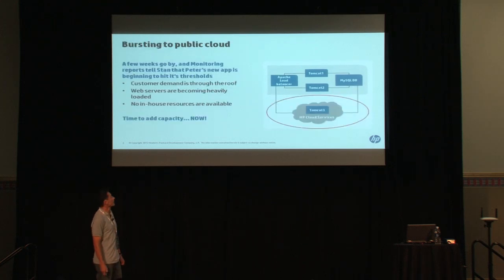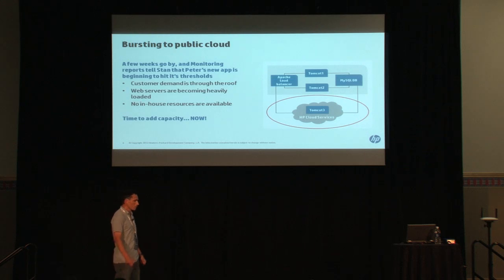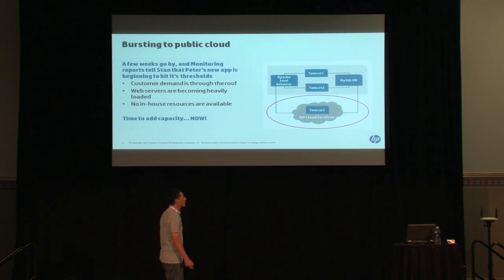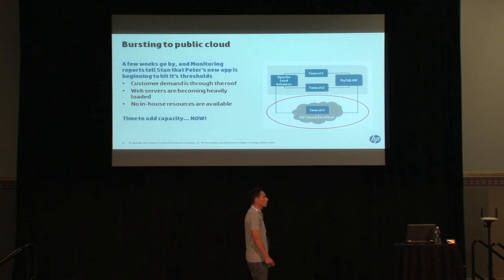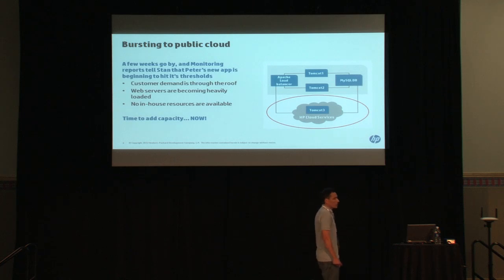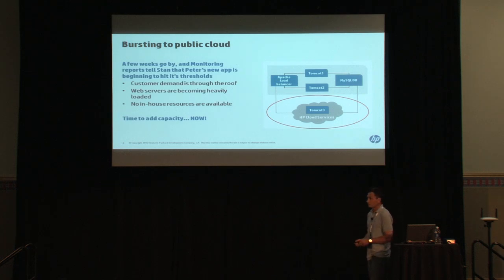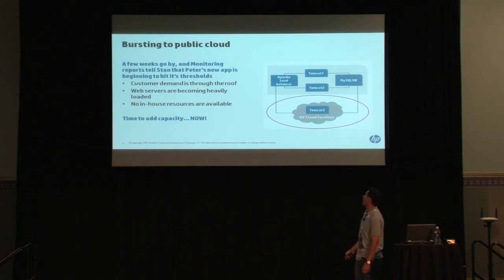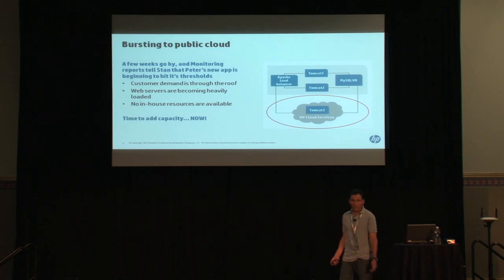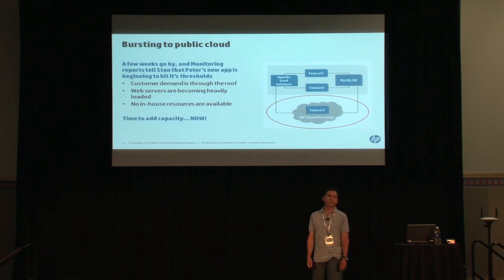A few weeks go by, and Mr. D notices that the application monitoring thresholds have been crossed. It's time to add an additional tier to the Tomcat servers. The IT engineer goes into the console, adds a new tier with a few clicks, and now a new tier is published and available in HP Cloud Services — the OpenStack HP Cloud Services — with the same Apache load balancer still on the front end.